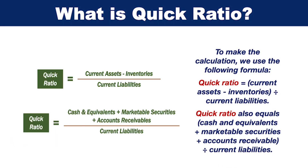To make the calculation, we use the following formula. Quick ratio equals current assets minus inventories divided by current liabilities. Quick ratio also equals cash and equivalents plus marketable securities plus accounts receivable divided by current liabilities.